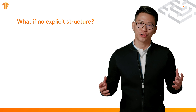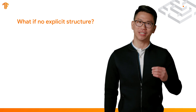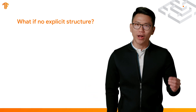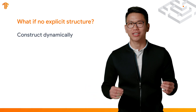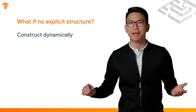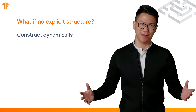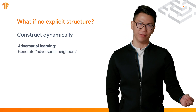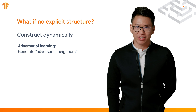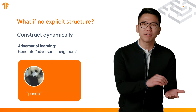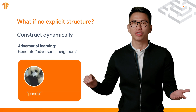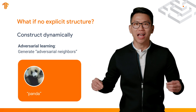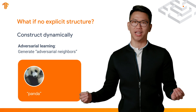You may want to ask: what if there is no explicit structure we can use to train a neural net? One approach is to construct the structure dynamically by creating adversarial neighbors. An adversarial neighbor is a modified version of the original sample, which targets at misleading the neural net to make it output incorrect classification.